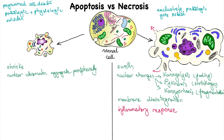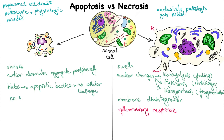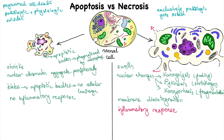In apoptosis, on the other hand, we have a shrunken cell which blebs. The blebs form apoptotic bodies, which still contain all the cellular material, and therefore we have no cellular leakage — meaning no inflammatory response is provoked. The apoptotic bodies are then phagocytosed by macrophages, not leaving anything behind.